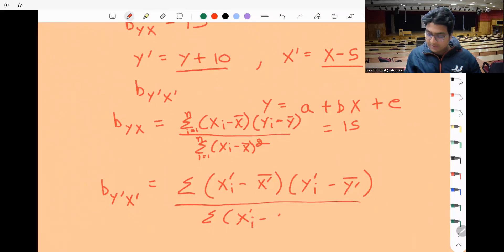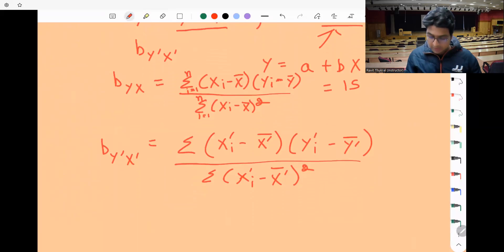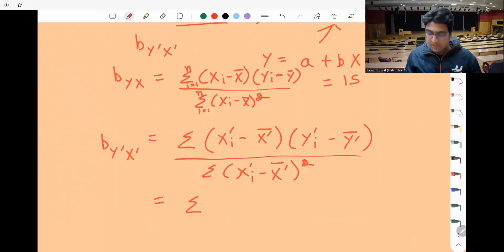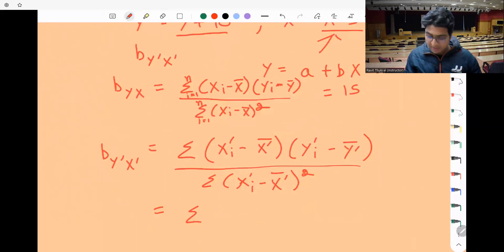X'i is nothing but X-5, so we'll simply replace it. X'i will be X-5.